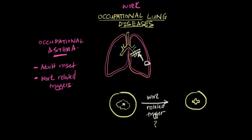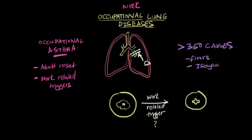What are these work-related triggers? There have been greater than 350 described causes of occupational asthma. At least in the United States, one of the most common causes is different types of flour, so bakers are at increased risk. Also, different types of isocyanates — molecules that various industry workers such as plumbers, roofers, and painters can often become exposed to.